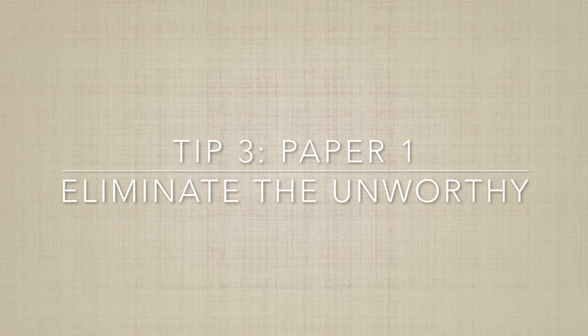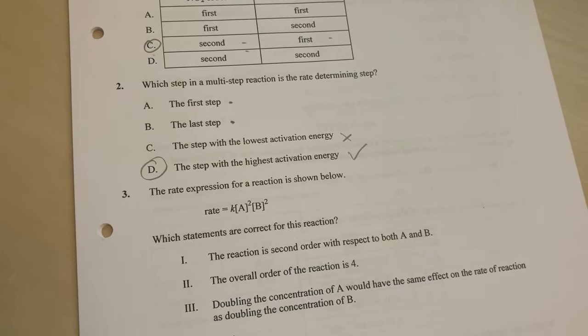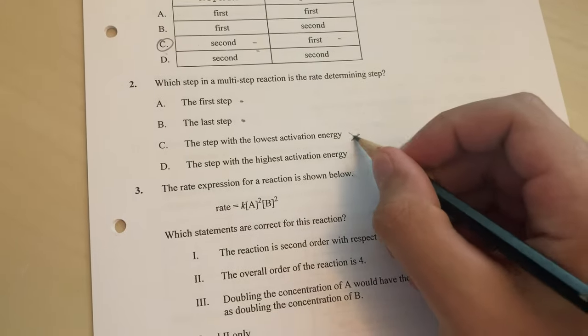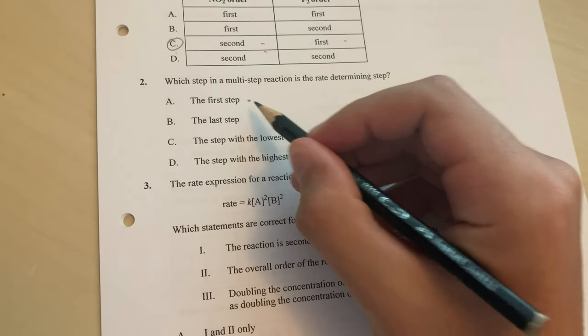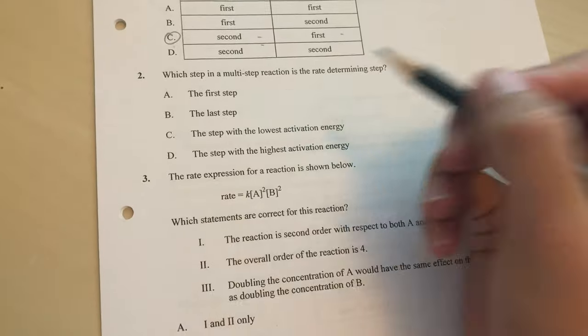Tip three is about Paper 1 — eliminate the unworthy. Paper 1 should be used to get the maximum amount of marks possible to balance out the really hard Paper 2, where it's very likely you will lose a lot of marks. The technique I would use is the elimination method: go through each option and put a tick next to the ones you think are right, a dot next to the ones you're unsure about, and a cross next to the ones you're pretty sure are wrong. This gives you the highest likelihood of getting that mark.